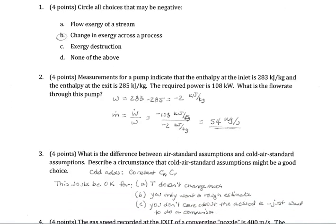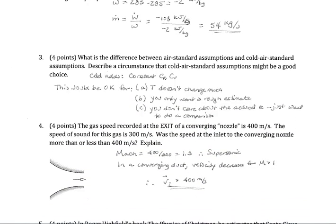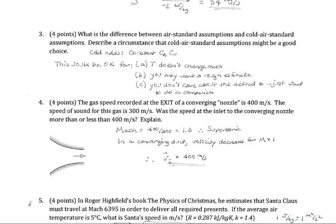Now question three was the difference between air-standard assumptions and cold-air-standard assumptions. So cold-air-standard is basically everything about air standard - that it's an ideal gas, all of those kinds of things - except for we add to it that the c_p and c_v are constant, which would be typical of air at, say, room temperature. So this is going to be appropriate when temperatures are cool and temperatures aren't changing much, so whatever you assume it will be fairly much the same out everywhere at all states within the cycle. Or we also use this when we just want rough estimates.